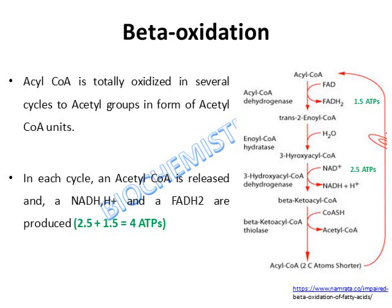Beta-oxidation is a mitochondrial process in which acyl-CoA is totally oxidized in several cycles to acetyl groups in the form of acetyl-CoA units. The cycle starts with an acyl-CoA (the activated form of fatty acid). Under the action of the enzyme acyl-CoA dehydrogenase, it is transformed into trans-enoyl-CoA, producing FADH2.